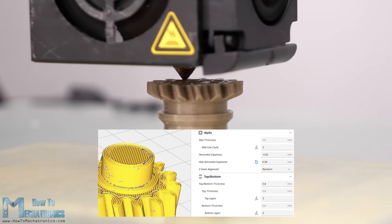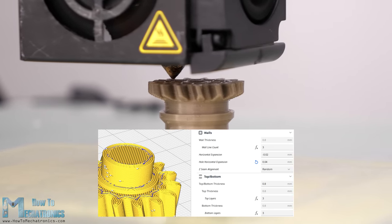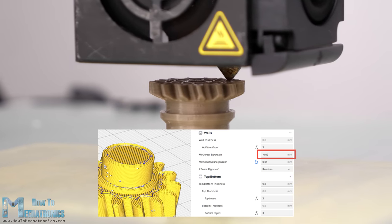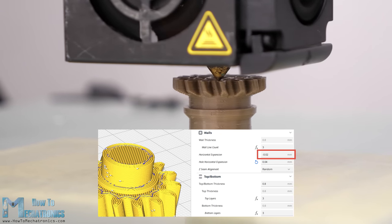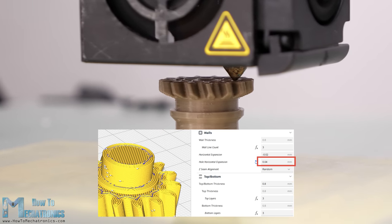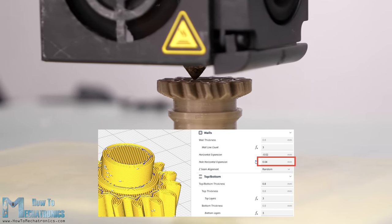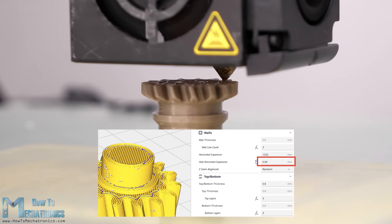I set the horizontal expansion to minus 0.02mm and the hole horizontal expansion to 0.04mm. Of course, you should do some test prints to see what values will give you the best results on your 3D printer.